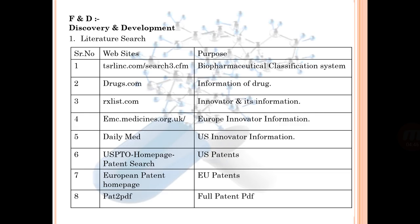About F&D — formulation and development — literature search is the main activity. Useful websites include drugs.com for drug information, tsrlinks.com/search3cfm for biopharmaceutical classification (Class 1, 2, 3, 4), dailymed for US innovator information, rxlist.com for innovator details, European Patent Homepage for European patents, and USPTO for US patents. Information can be collected using these websites and their purposes.